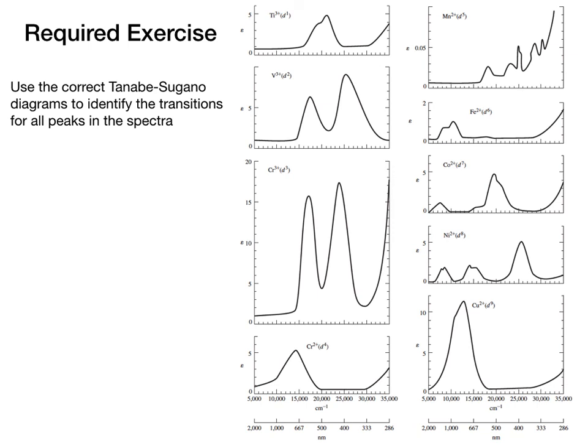That concludes our discussion today. As homework, look at the collection of UV-Vis absorption spectra — you can find the same data in the text. Find the corresponding Tanabe-Sugano diagram and use it to assign the UV-Vis absorption peaks to particular DD transitions in the diagram. I'll see you on Wednesday.